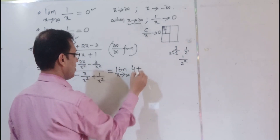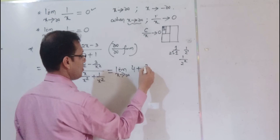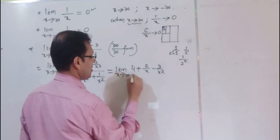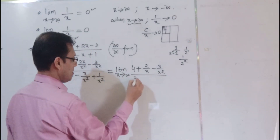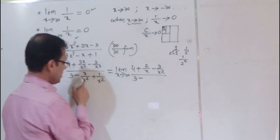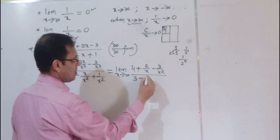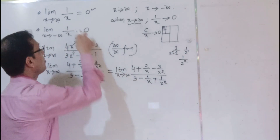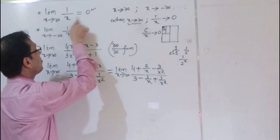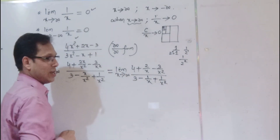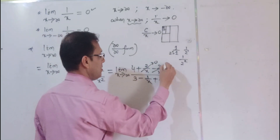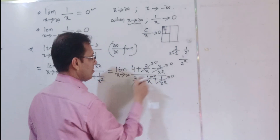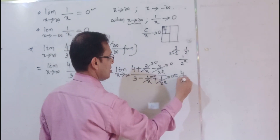Since x tends to infinity, 2/x tends to 0, 1/x tends to 0, and 1/x² tends to 0. So the limit becomes (4 + 0 - 0) by (3 - 0 + 0) which equals 4 by 3. That is a constant and is your answer.